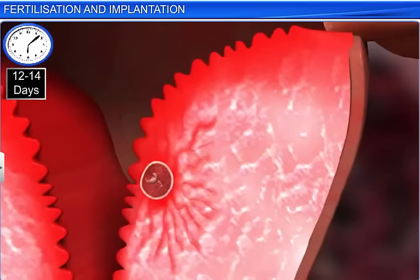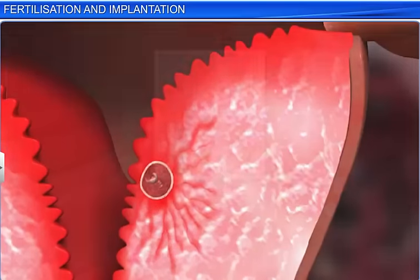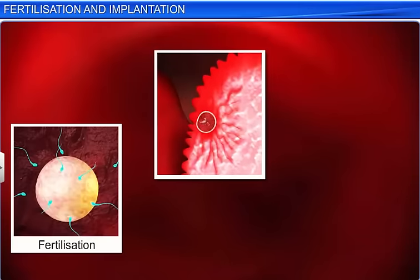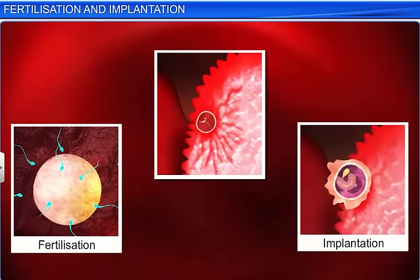Moreover, after implantation, inner cell mass cells get differentiated and begin to form the embryo. Embryo formation is thus a complex process that begins with fertilization and ends with implantation of the embryo.